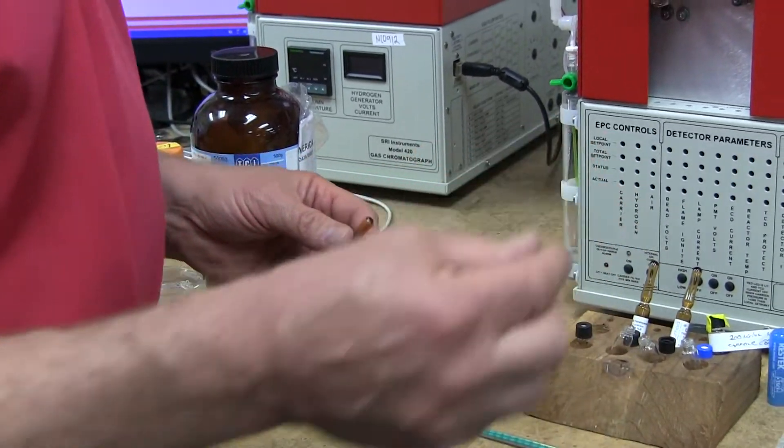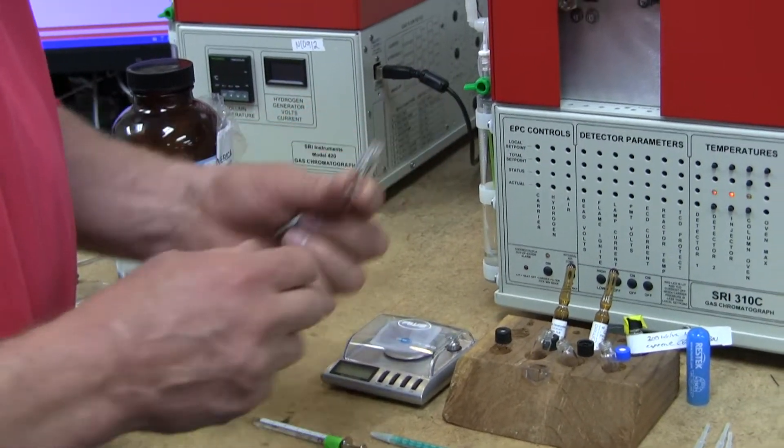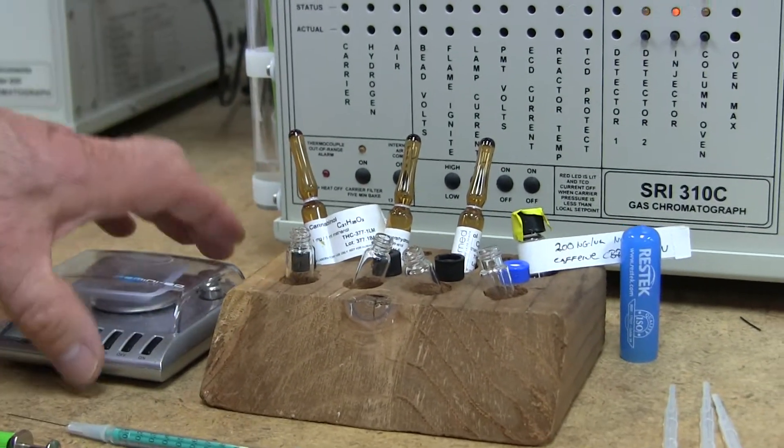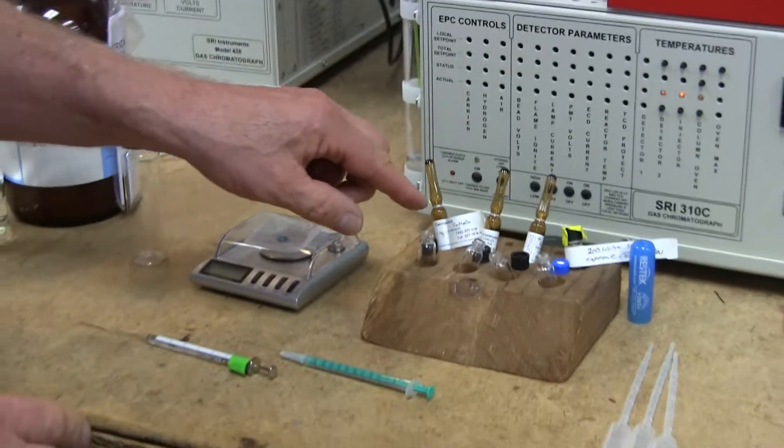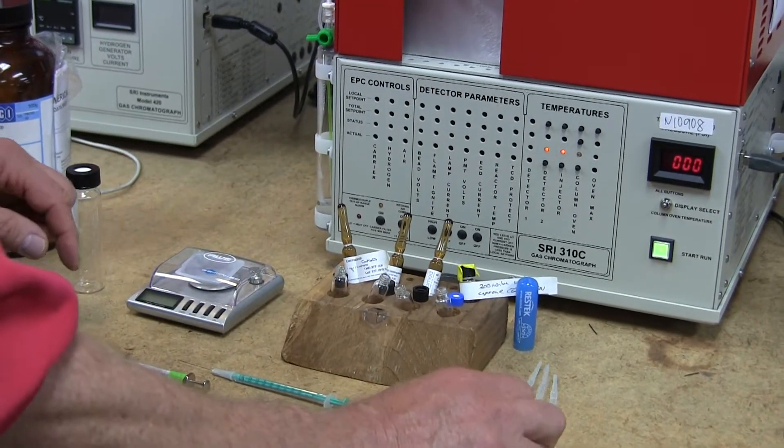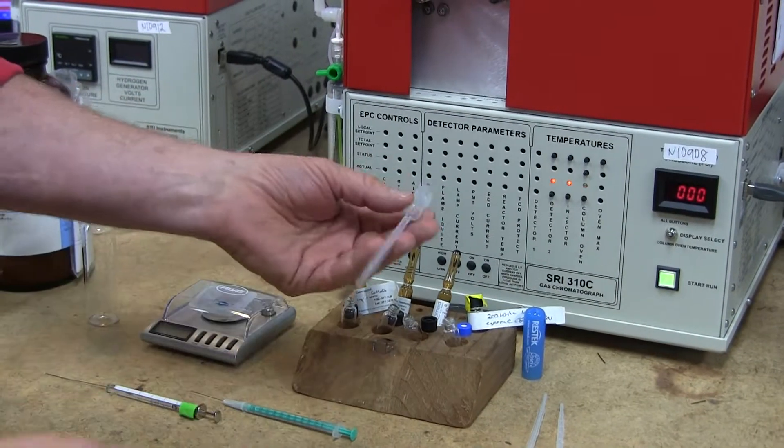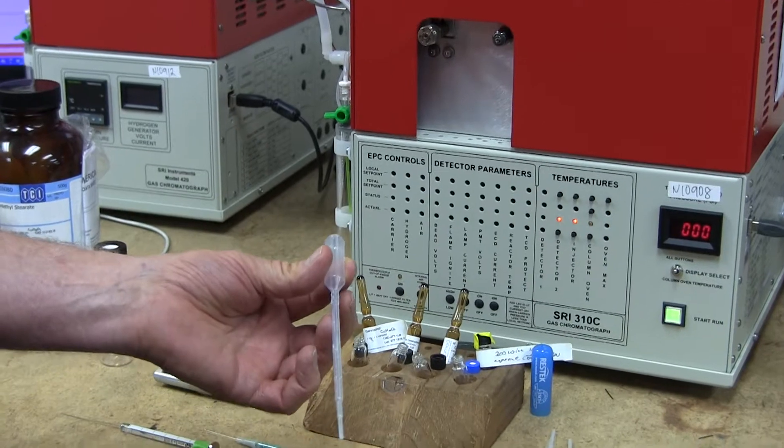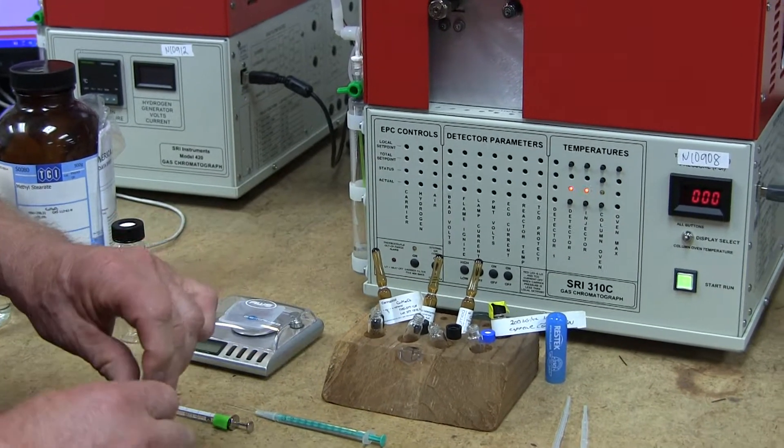So, we have to get the sample, the standard rather, out of this glass ampule and into that little bottle. So when you buy a GC from us, we give you these little disposable plastic pipettes. If not, they're very cheap, they're three or four cents each, you buy a box of a thousand.